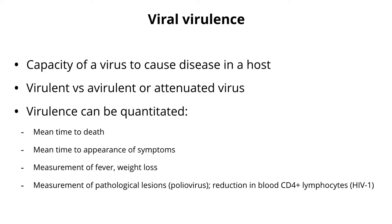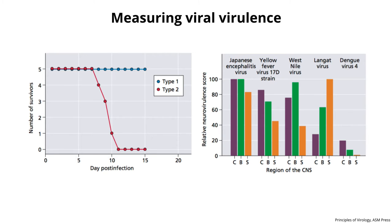If we want to study virulence in animals, we have to quantitate it — put numbers on it so we can compare results. There are many ways to do that: mean time to death, mean time to appearance of symptoms, fever, weight loss, or measurement of pathological lesions. In our polio-infected mice, we can do sections of the spinal cord and brain and look at destruction of neurons by the virus. For HIV, that virus specifically kills CD4-positive T lymphocytes, so you can take blood and measure the number of CD4-positive cells — with HIV infection, the numbers go down.